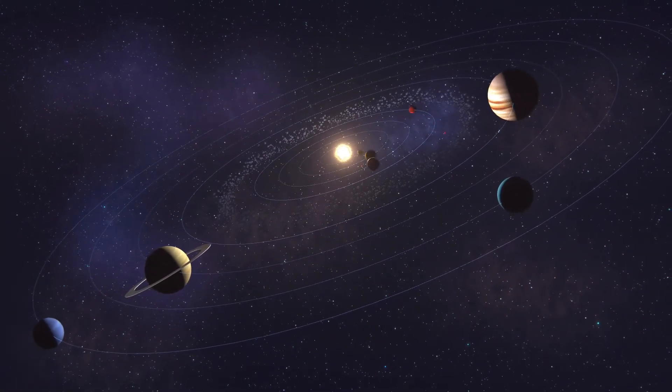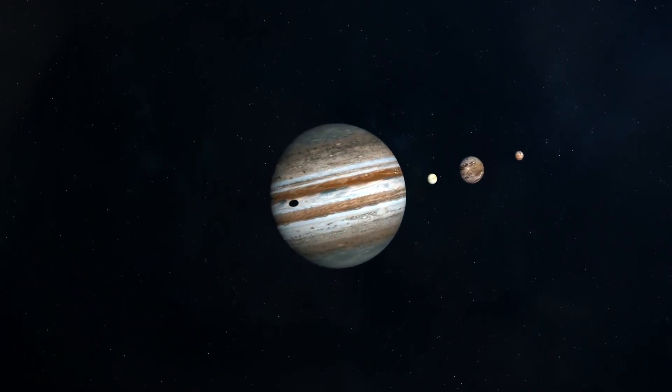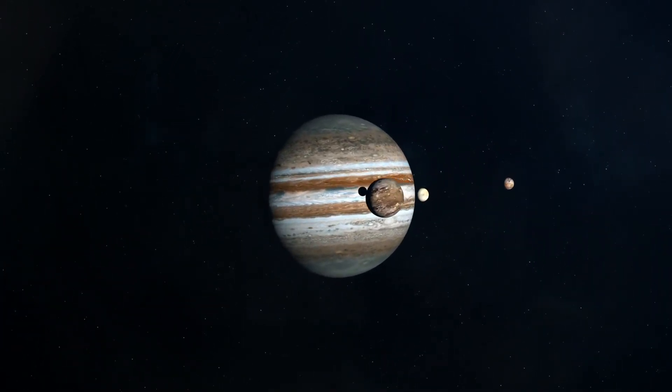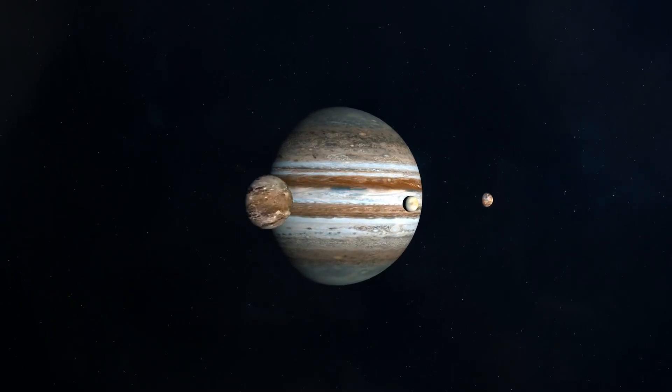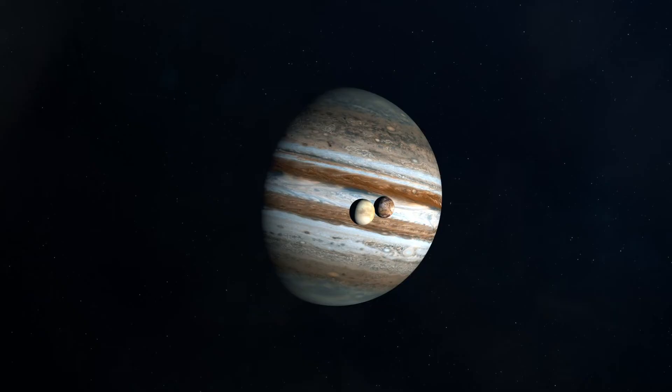While not nearly as big as the Sun, Jupiter is also much more massive than Earth, giving it a much stronger gravitational pull. And that's why it has more than 80 moons orbiting its mass compared to Earth's one.